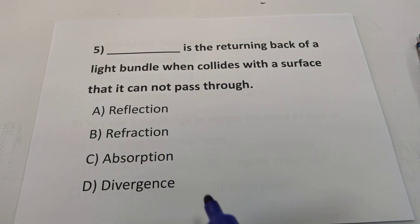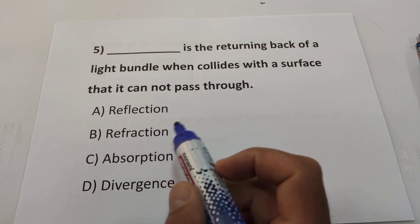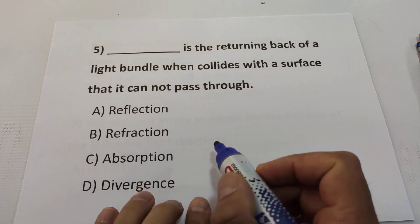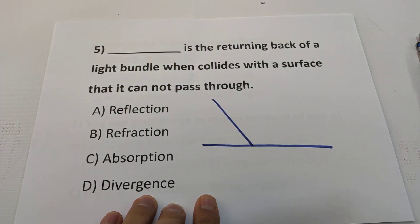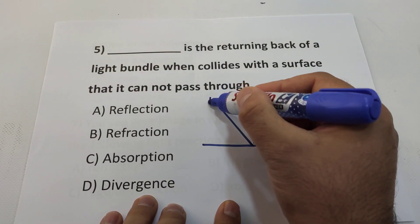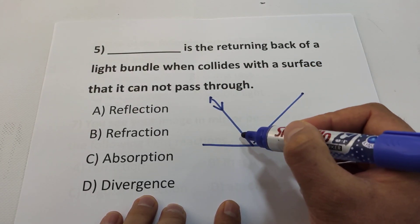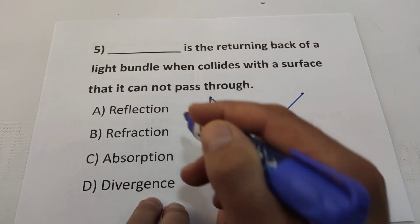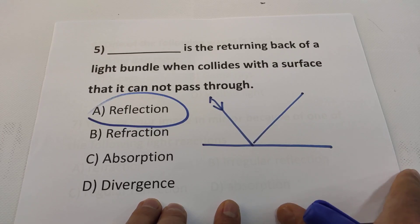Reflection is the returning back of light when it collides with a surface it cannot pass through. The light coming in is called incident light, and the light going back is called reflected light. So the answer is reflection.